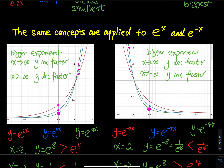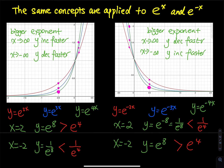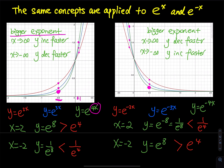Moving on to the e functions. The same concept carries over. On the right I have e to the x, 3 to the x, and 4 to the x with the same color coding. When x goes to positive infinity, comparing e^(2x), e^(3x), and e^(4x), you compare the exponents. Bigger exponents mean y increases very fast when x goes up and decreases very fast when x goes down. When x equals 0.1, the green curve has the largest y value. When x equals negative 0.5, the green curve is on the bottom.